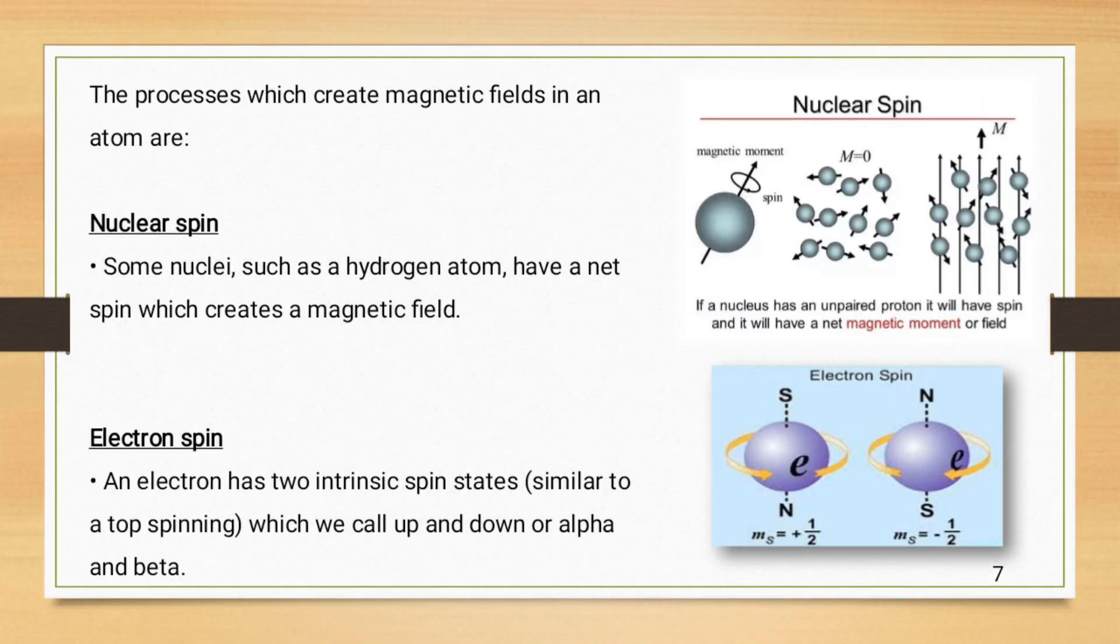The processes which create magnetic fields in an atom are nuclear spins. Some nuclei such as hydrogen atom have a net spin, which creates a magnetic field. In the figure as shown above, if a nucleus has an unpaired proton, it will have spin, and it will have a net magnetic moment or field.